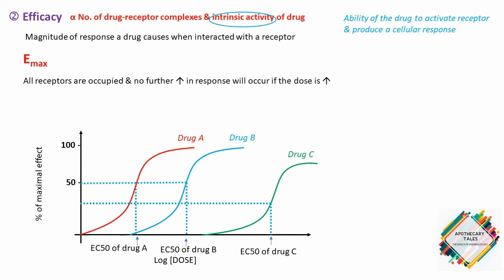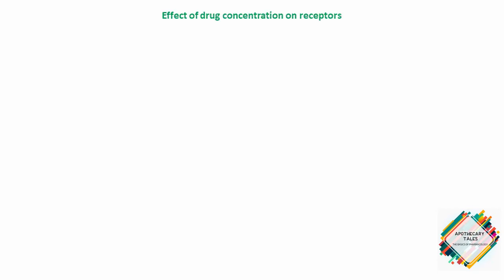Next, regarding the effect of drug concentration on receptor binding: the quantitative relationship between drug concentration and receptor occupancy applies the law of mass action to the kinetics of drug-receptor binding. The law of mass action states that the rate of a chemical reaction is proportional to the concentration of the reacting substances. When the drug binds to the receptor, it forms a drug-receptor complex that is directly proportional to the biological effect.